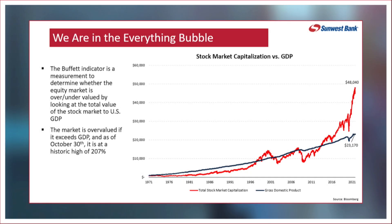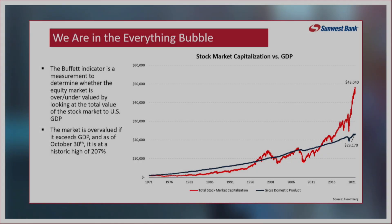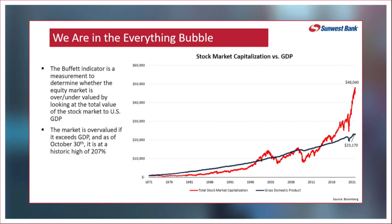Its measurement is to determine whether the equity markets are overvalued or undervalued by looking at the total value of the stock market to U.S. GDP. Typically, as you can see, going back to 1971, the stock market value is a little bit below, at times higher — that was the Internet bubble in 2000, 2001, where it peaked up — but pretty much tracks GDP.